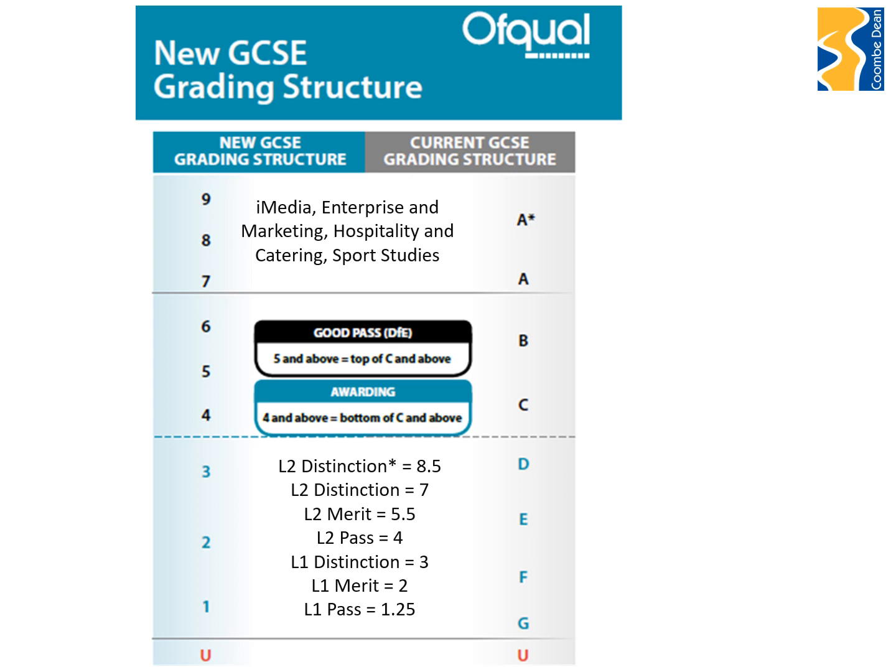If a student studies enterprise and marketing, as an example, the grade they receive at the end of that course will be on the scale just below the awarding section on the graphic. For example, the equivalent of a grade 4 will be a Level 2 pass. A Level 2 pass is equivalent to a GCSE grade 4, and the highest that can be achieved is the Level 2 Distinction Star, which is worth just below a grade 9 — indeed between a grade 8 and grade 9 on the 9 to 1 scale. The differences ultimately come down to the way the courses are assessed — there is less terminal assessment than in the 9 to 1 GCSE courses.